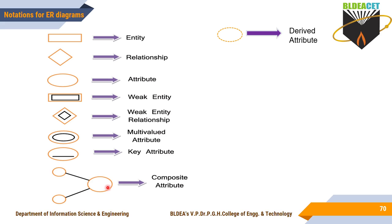So this is the notation for composite attributes, this for key attributes, this for multi-valued attributes, this for weak entity type, this for the weak entity relationship type, and this for the regular attribute, entity type, and relationship. For derived attributes — attributes derived from stored attributes — a dashed oval notation is used. These are the notations used when drawing ER diagrams.